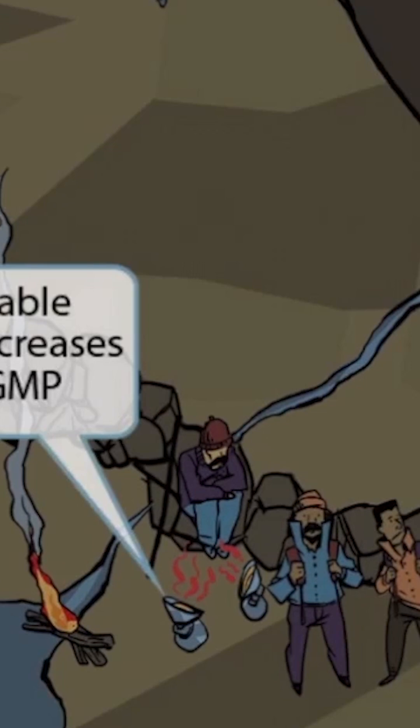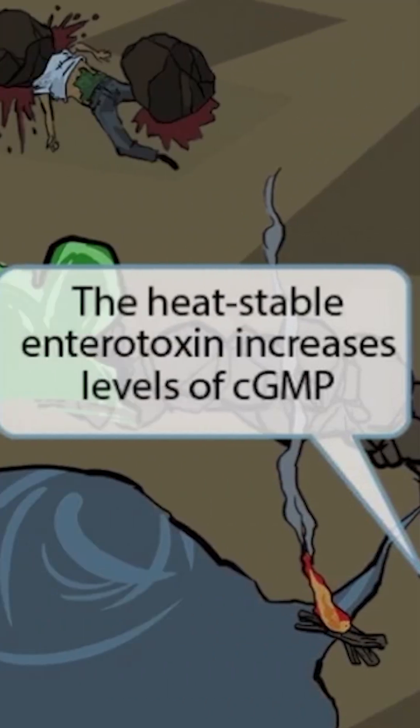The heat generators that he's using are here to help you remember the word generator, which in turn should help you remember cyclic GMP. So the heat-stable enterotoxin overactivates guanylate cyclase, which results in increased levels of cyclic GMP. This decreases the ability of the intestinal mucosa to reabsorb water and salt, which in turn creates an osmotic effect within the lumen of the gastrointestinal tract and contributes to the watery diarrhea present among those infected. So heat generator represents increases in cyclic GMP.